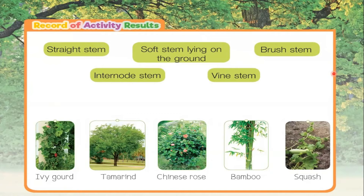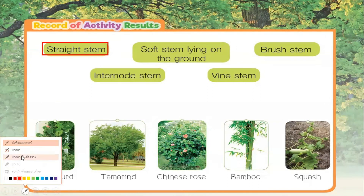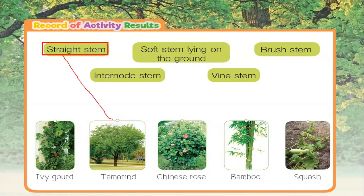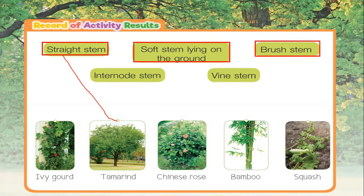Now look at your workbook. Teacher wants you to match the words to the pictures. Your first word is stretch stem — which picture matches? Stretch stem is the tamarind, right? Next, word number two is soft stem lying on the ground.